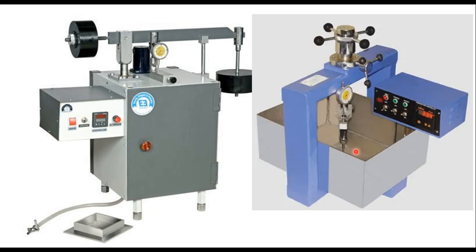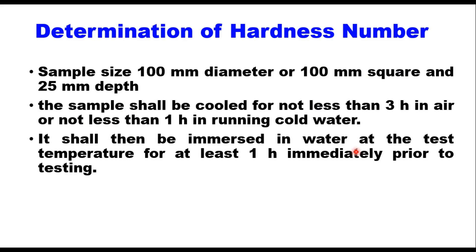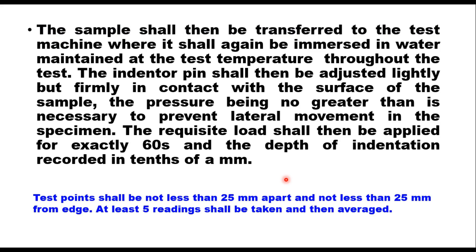To determine the hardness number, the sample size is 100 mm diameter and 25 mm depth. The sample will be cooled for not less than 3 hours in air or not less than 1 hour in running cold water. Then it should be immersed in water at test temperature for at least 1 hour immediately prior to testing. After that, the sample is transferred to the test machine where it shall again be immersed in water maintained at test temperature throughout the test.